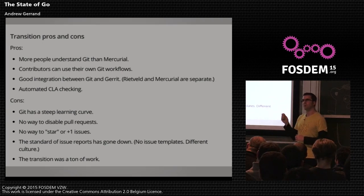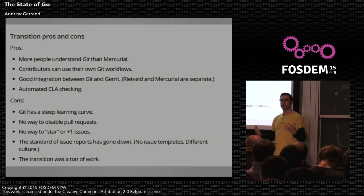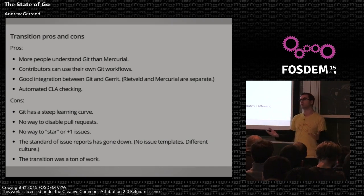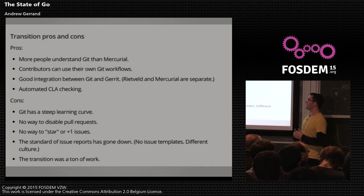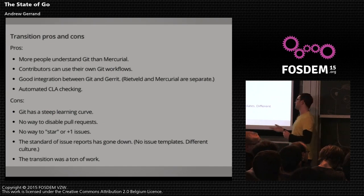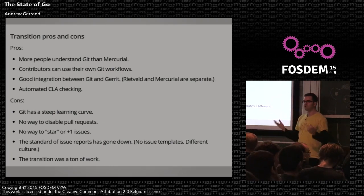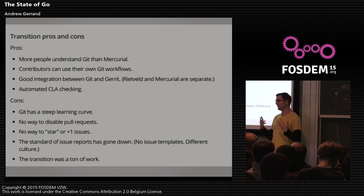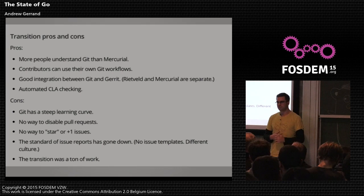We also now have automated CLA checking. The contributor license agreement is a way of saying, as a contributor to Go, that you have the authority to give the project the code you're contributing — it protects anyone who uses Go from spurious licensing claims. Previously we had to check a spreadsheet inside Google to see whether someone had signed a form. Now, if we receive a code review through Gerrit, we know that person has signed the CLA. As developers we don't even need to think about it anymore.